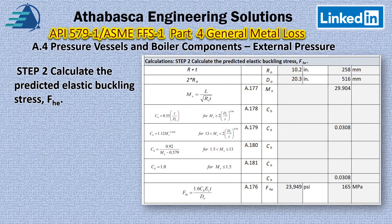Now we're ready to do our math to determine our buckling stress. From the previous slides, we looked at all the geometry relationships. We've determined the outside radius is 10.2, so Do is 20.3. Knowing our unsupported length and radius, we calculate mx from equation 177. There are a few different scenarios to calculate Ch — you have to check all these different conditions for mx. In our case, equation 179 applies and we determine Ch to be 0.038.